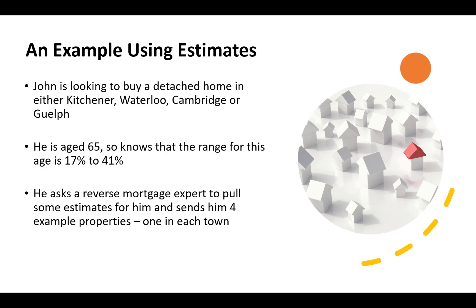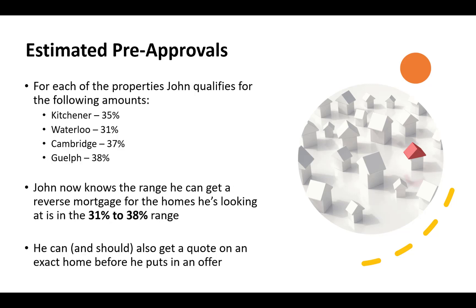Here's an example using some estimates. I've got a client called John — completely made up — and he's looking to buy a detached home in Kitchener, Waterloo, Cambridge, or Guelph. He's age 65, so he would normally qualify for around 17 to 41% on a reverse mortgage. He asks a reverse mortgage expert to pull some estimates because he wants to buy a home with a reverse mortgage. So he picks four example properties, one in each town — this is how I would go about using estimates when using a reverse mortgage to buy a home.